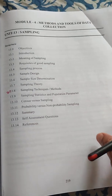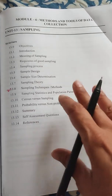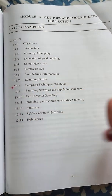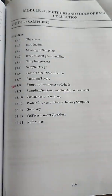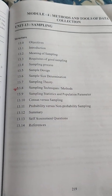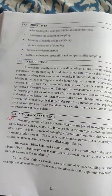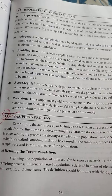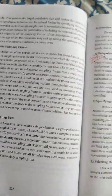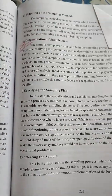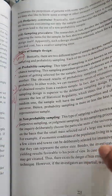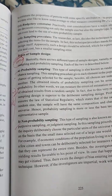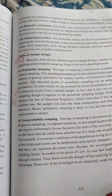Next, Module 4 — methods and tools of data collection. Primary data and secondary data are covered. The sampling process, determination of sample size, and types of sample design are important. Types include probability sampling and non-probability sampling — know the difference between both.